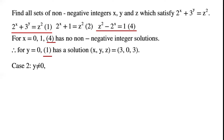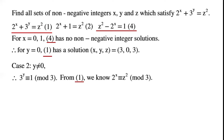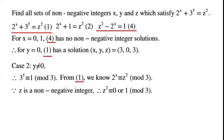Case 2: y doesn't equal 0. So 3 to the power of y is congruent to 0 mod 3. From equation 1, we know that 2 to the power of x is congruent to z squared mod 3. Because z is a non-negative integer, z squared is congruent to 0 or 1 mod 3. So 2 to the power of x is congruent to 0 or 1 mod 3, which means x must be even.